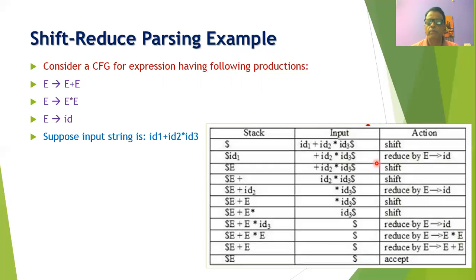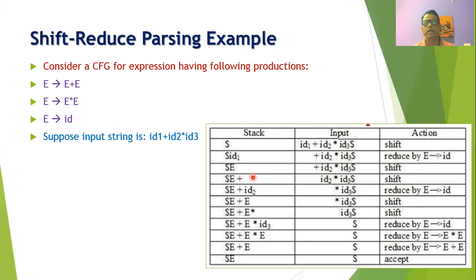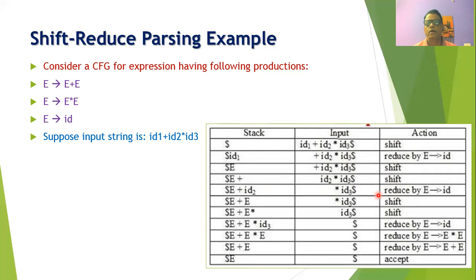The second action is to reduce ID by E, since the top of the stack contains the handle ID1. The stack now contains dollar E while the input buffer has plus ID2 star ID3 followed by dollar. The next SHIFT action moves plus onto the stack. Then ID2 is shifted onto the stack, giving stack content dollar E plus ID2. ID2 is then reduced to E, giving dollar E plus E, with input star ID3 followed by dollar.